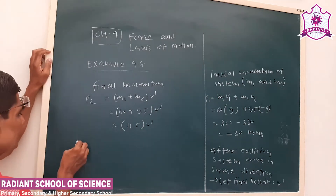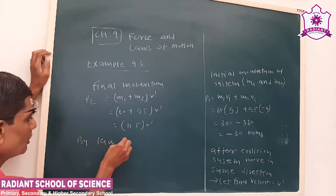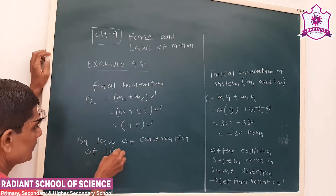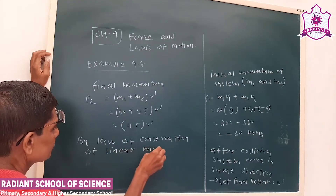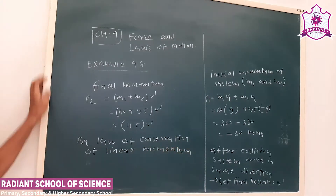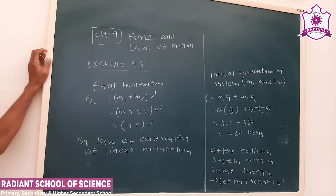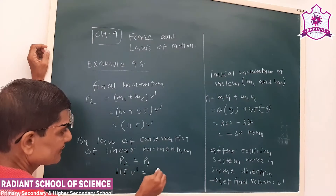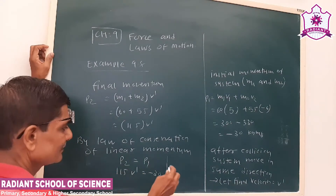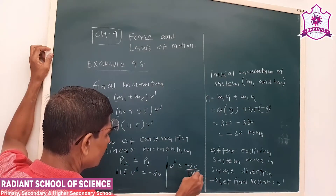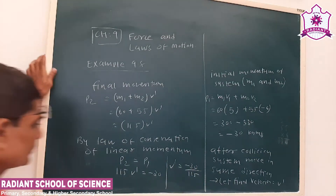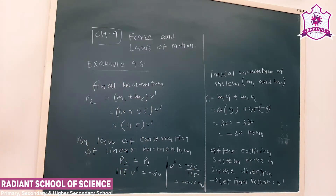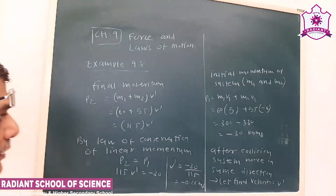By the law of conservation of linear momentum, P2 is equal to P1. P2 gives us minus 30, so V-dash is minus 30 upon 115, which gives us minus 0.26 meters per second. This is how we find out the final velocity of the system.